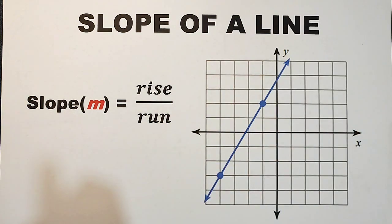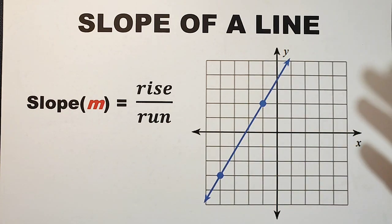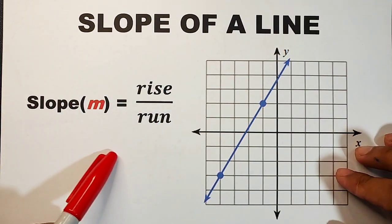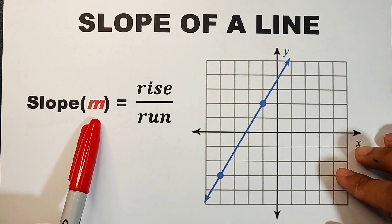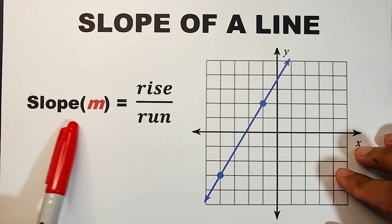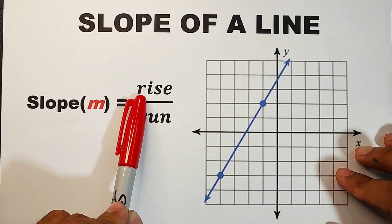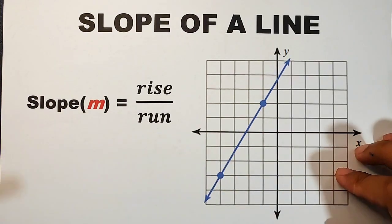So without further ado, let's do this topic. Basically, the slope of a line is defined as the steepness of the line, or the inclination of the line. Others refer to the slope of a line as the change in the values of y over the change in the values of x in a Cartesian plane. The formula uses the letter m to denote slope, and it is equal to rise over run. The rise is the change in the y values or y-axis, while the run refers to the change in the x-axis.